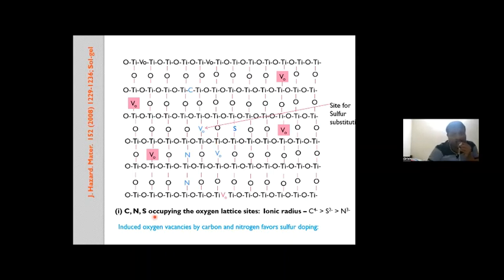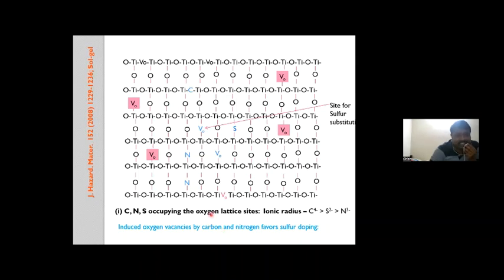Why do carbon, nitrogen, and sulfur occupy the oxygen lattice sites? TiO2 is an n-type semiconductor that by default has oxygen vacancies. These oxygen vacancies serve as sites for sulfur substitution. Carbon and nitrogen, because of their lower charge compared to oxygen, induce additional oxygen vacancies for charge compensation, according to Kröger-Vink notation. The Ti-O bond in the lattice is replaced by Ti-S, Ti-N, or Ti-C bonds, and the simultaneous formation of oxygen vacancies facilitates all dopants to occupy oxygen sites.